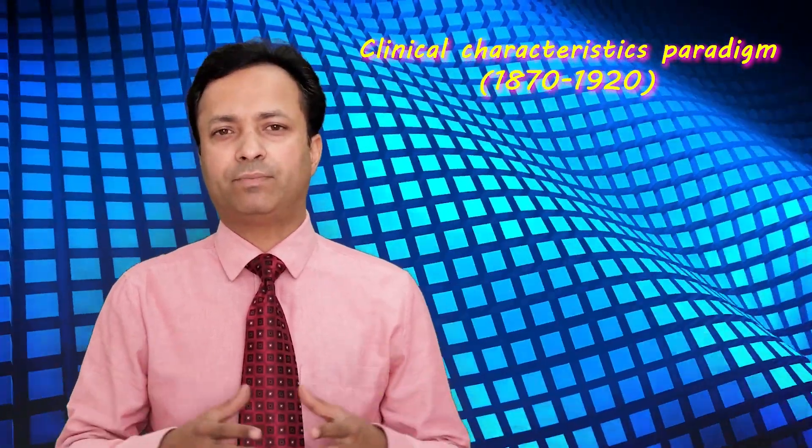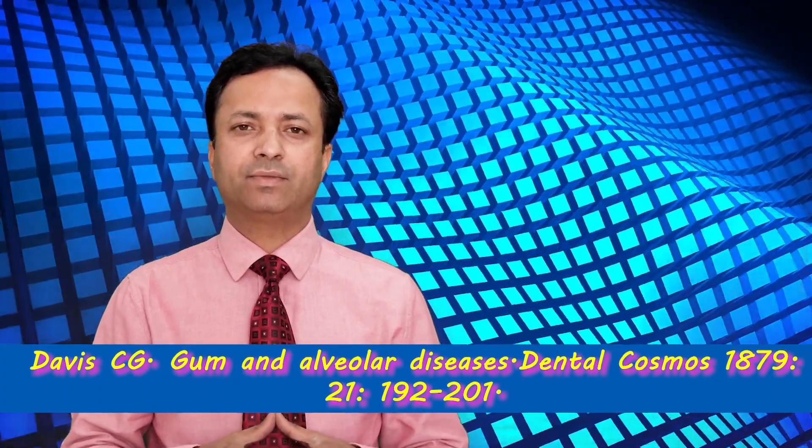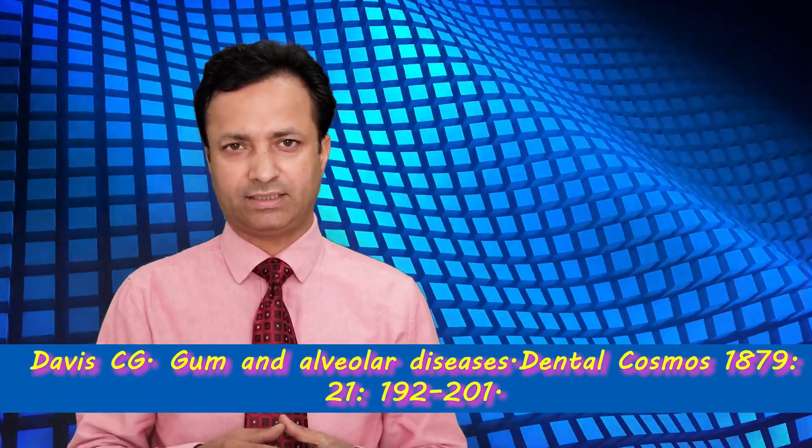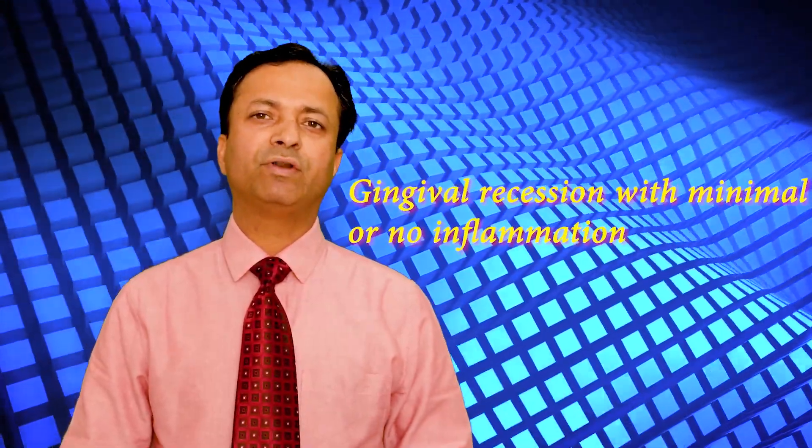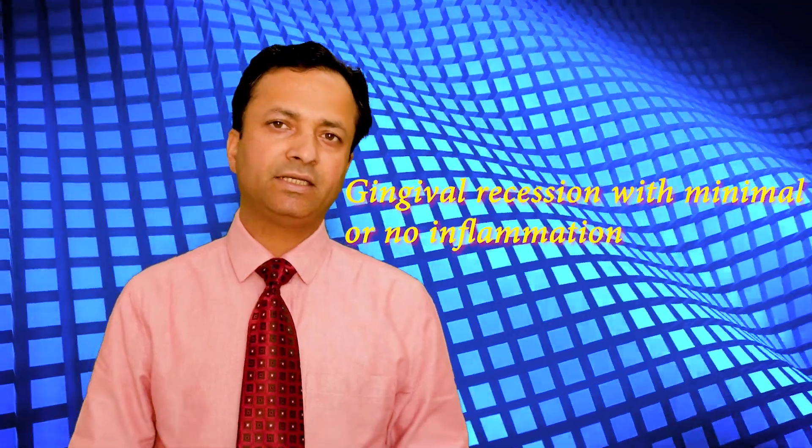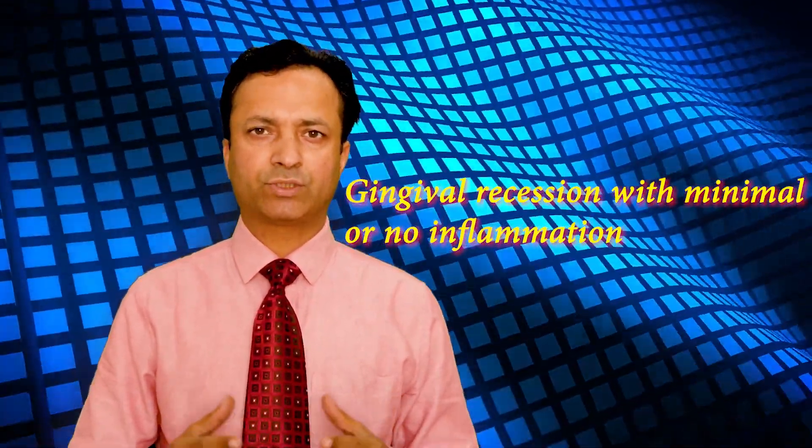So very good example of these classification systems was the classification system given by Dr. C.D. Davis. In this classification system he has given three categories, three classes of the diseases. One is gingival recession with minimal or no inflammation. In this category he included those cases which were caused due to toothbrush trauma and there was a minimal inflammatory component. The second category was periodontal destruction secondary to calculus deposits.